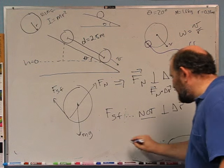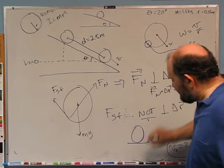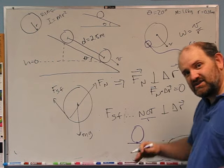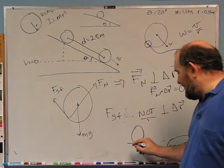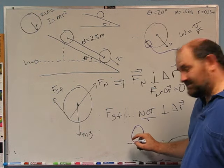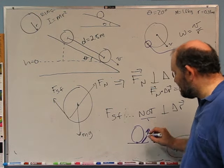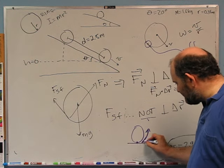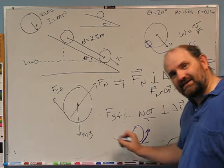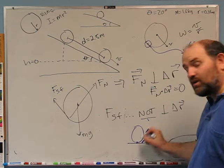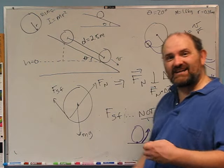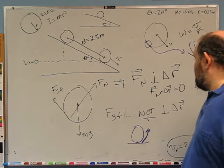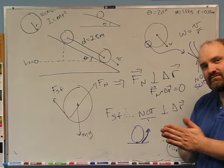Because the wheel rolls without slipping, the contact point is always at rest relative to the ground. The Δr relevant to static friction is the Δr of the contact point, and that is always zero — so static friction does no work. Compare this to a spinning wheel held fixed: there kinetic friction acts because the contact point is sliding, and kinetic friction does do work. The key is always how the contact point of the force is moving.